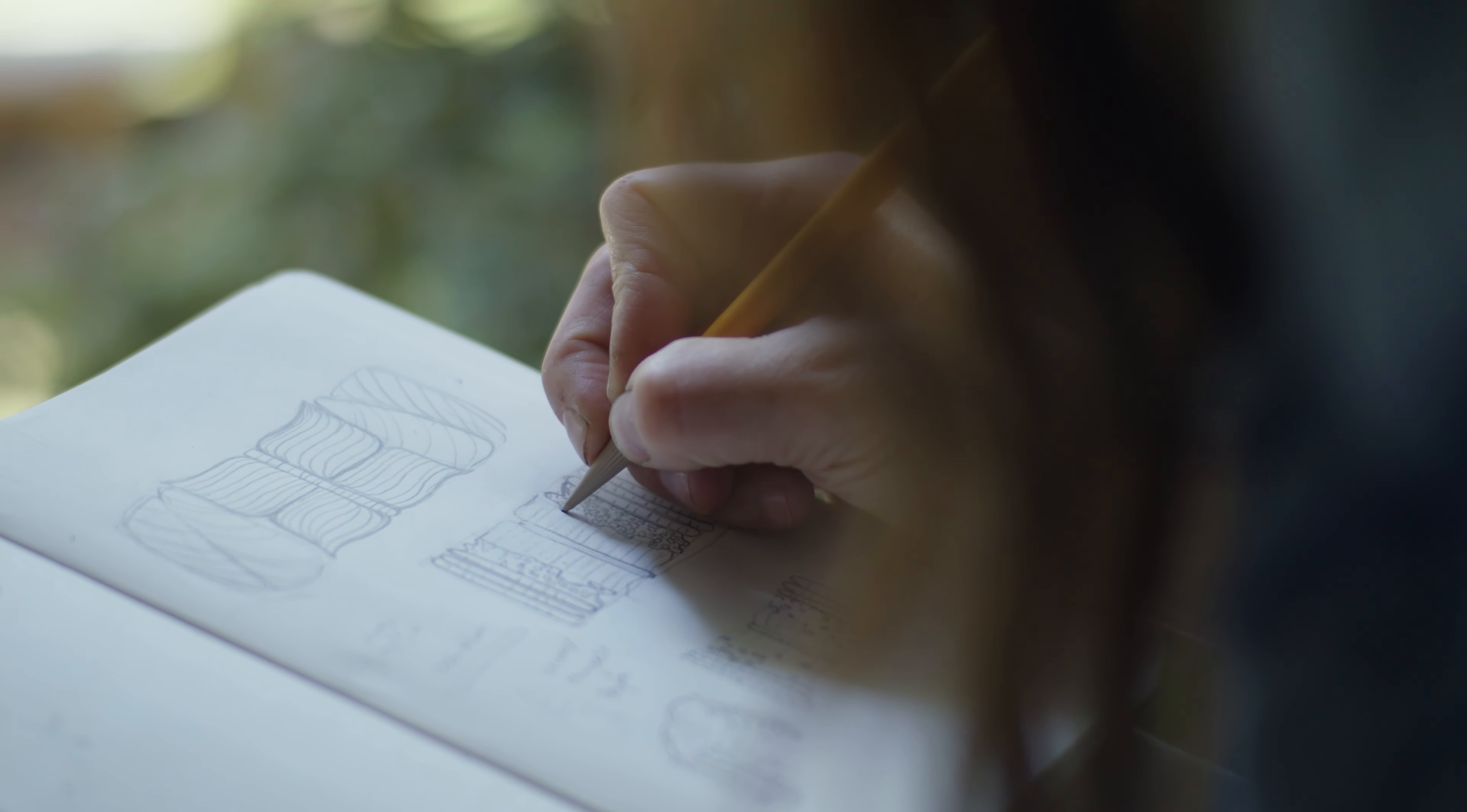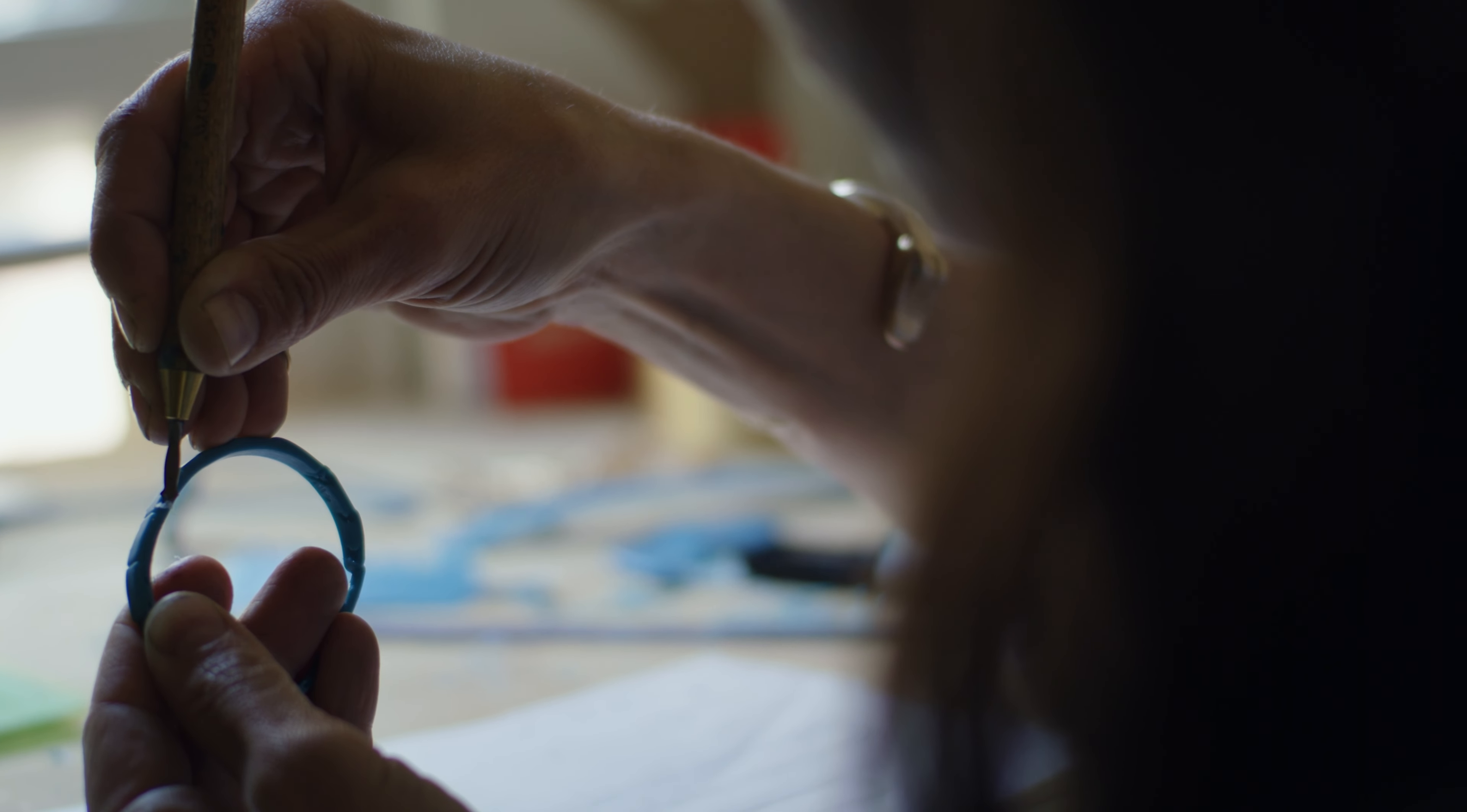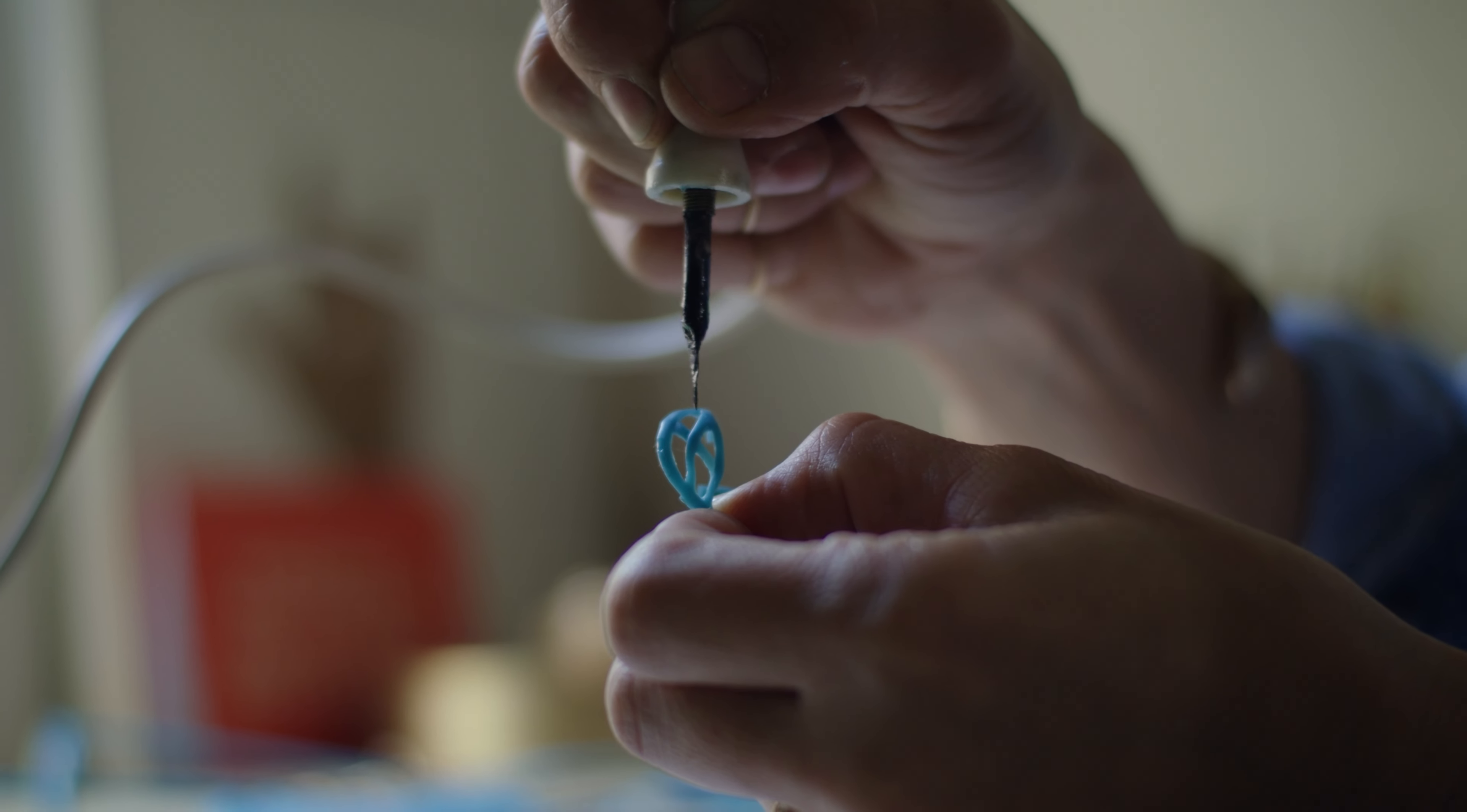The first step in lost wax casting is to turn ideas and sketches into three dimensional form by carving them into wax. This original wax carved piece of jewelry is called the master.